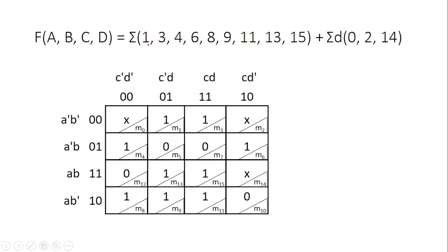Now I am going to put the minterms in the K-map. Wherever the minterm values are, mark them as 1. So M1 is marked 1, M3 is marked 1, M4 is marked 1. All minterms are marked as 1. Then M6 is marked 1, M8 is marked 1, M9 is marked 1, M11 is marked 1, M13 is marked 1, M15 is marked 1. Remaining cells are all 0.